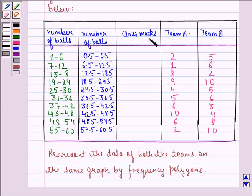Now we will find the class marks of all these intervals. We get the class marks by finding the average of the lower limit and the upper limit of an interval. So here we can get the class marks by 0.5 plus 6.5 divided by 2. That is 3.5.